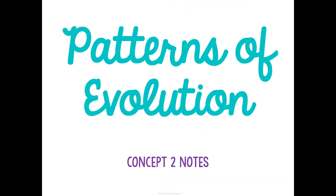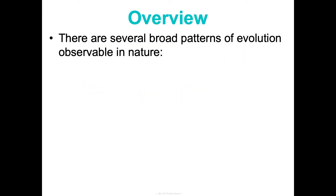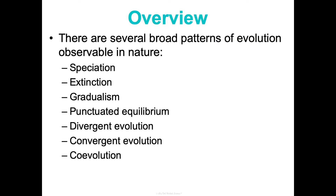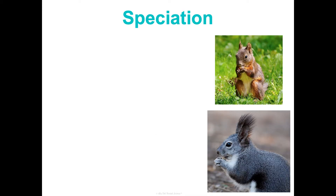We are in concept two now, and we're going to be talking about broad patterns that we see when we look at evidence of evolution. These are the ones we're going to talk through. It's going to be very short notes, so if you were struggling during concept one, I promise all the other concepts this unit are much, much smaller and more digestible.